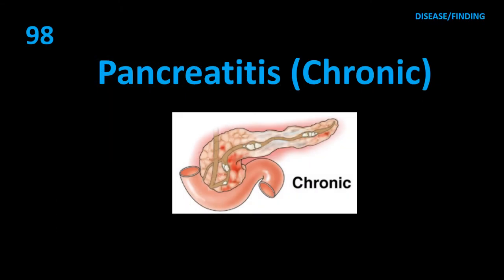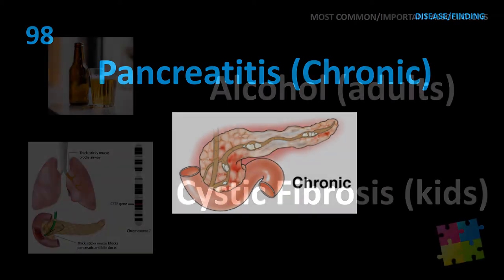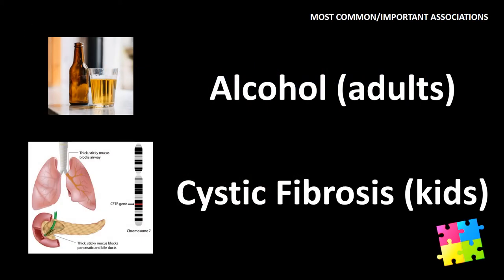Item 98: Chronic pancreatitis — alcohol in adults; cystic fibrosis in kids.